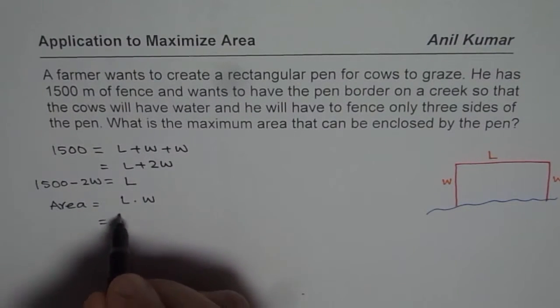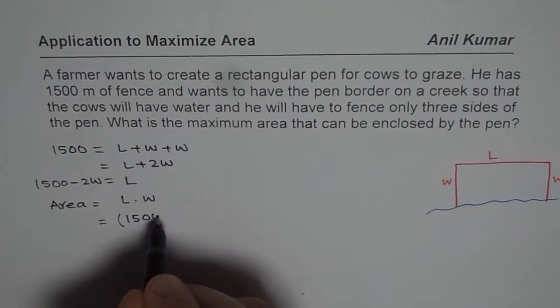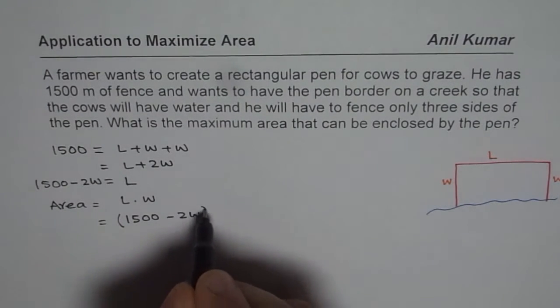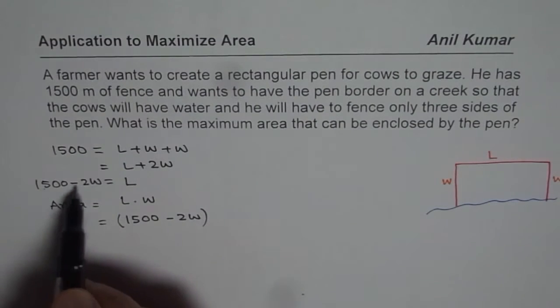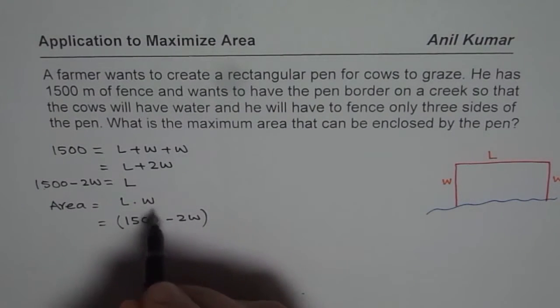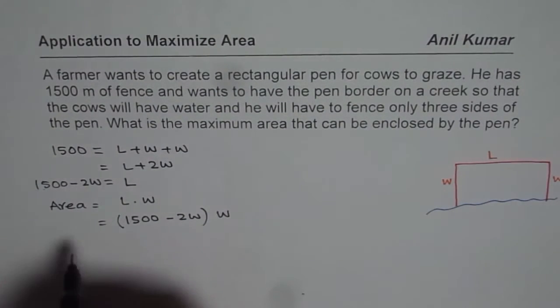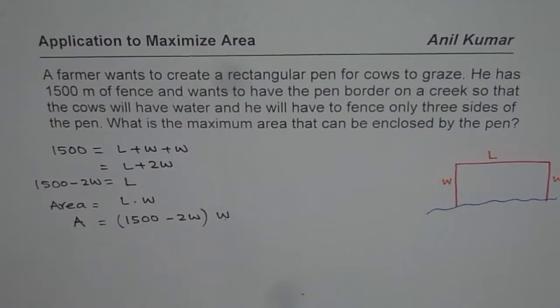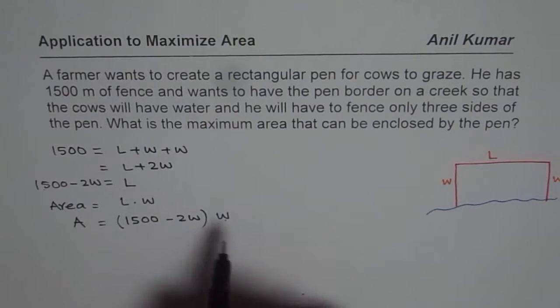So length, as we know, is in this case 1,500 minus 2W. So that is the length. So we will substitute this here for length. And then we can write this as double. So we get area in terms of only width. One variable that is. Now it is a quadratic equation, which you can solve to maximize.